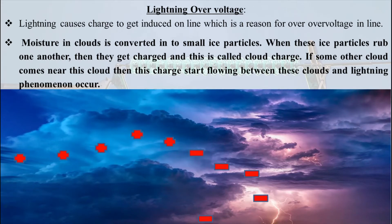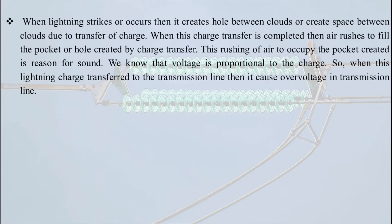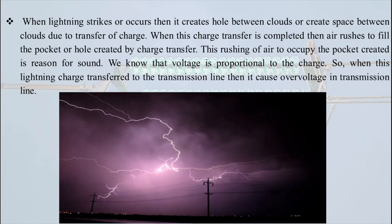If some other cloud comes near this charged cloud, then there is a transfer of charge between these two clouds, and this transfer of charge is responsible for the lightning phenomenon. That's why lightning generally occurs between clouds. But sometimes this lightning reaches the earth, and when it does, it is a matter of concern because we have transmission lines on earth.